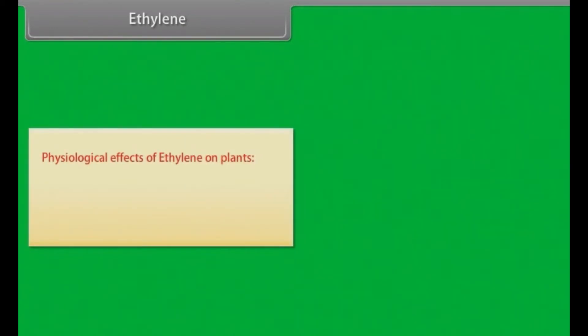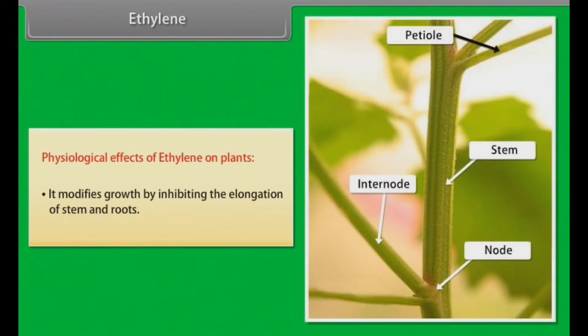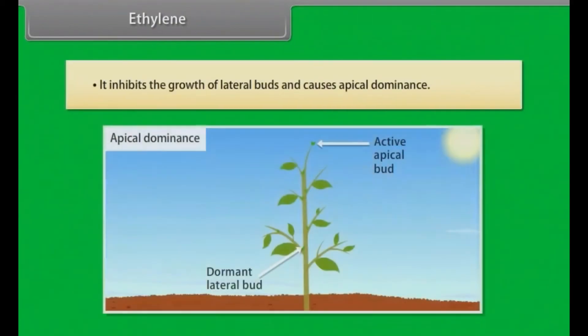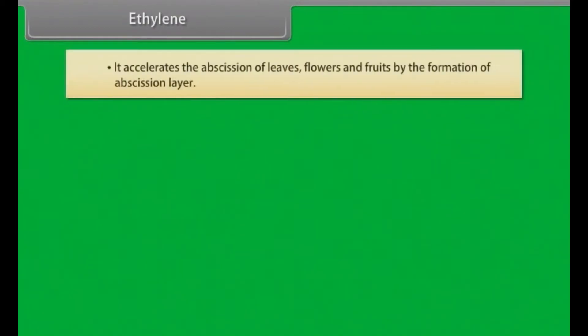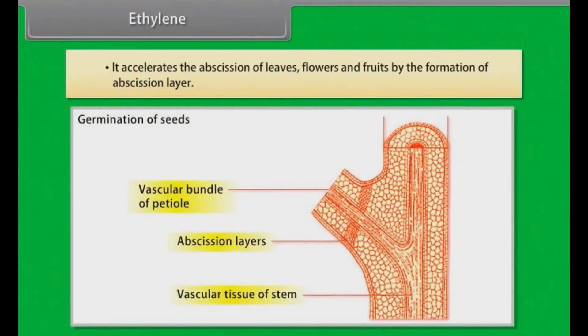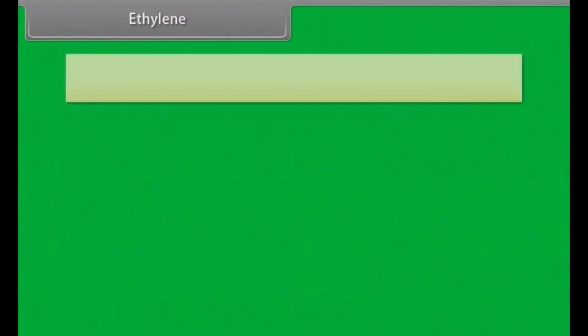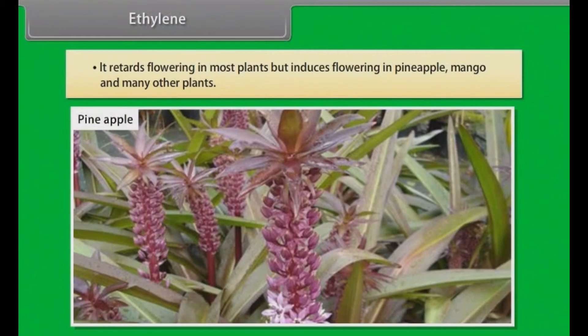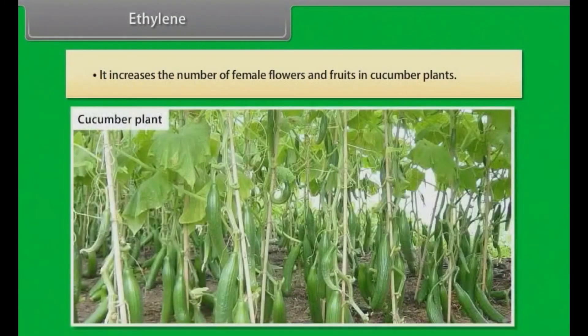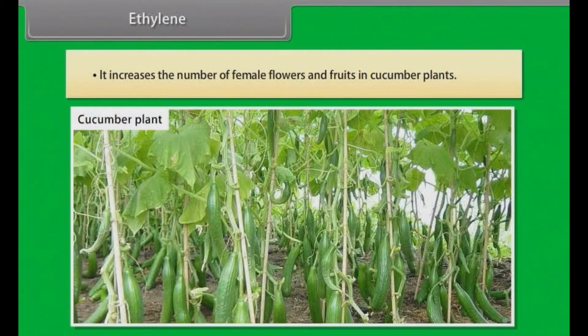Physiological effects of ethylene on plants: it modifies growth by inhibiting the elongation of stem and roots. It inhibits the growth of lateral buds and causes apical dominance. It accelerates the abscission of leaves, flowers and fruits by formation of abscission layer. It retards flowering in most plants, but induces flowering in pineapple, mango and many other plants. It increases the number of female flowers and fruits in cucumber plants.